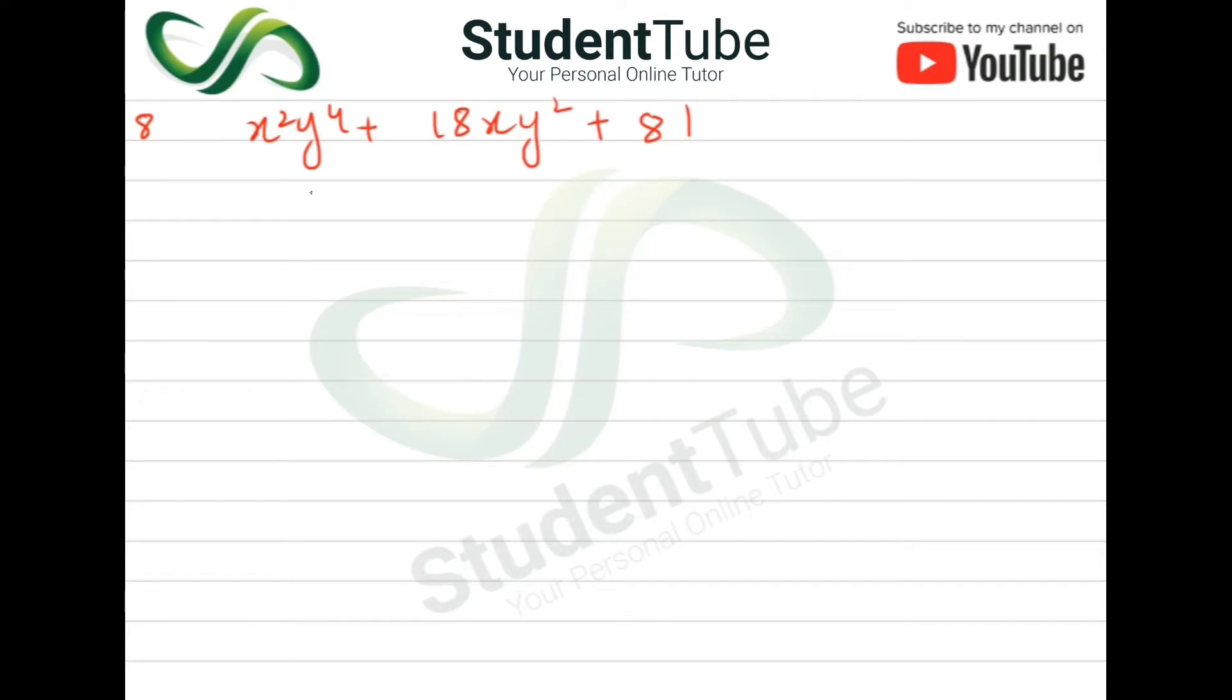Question number 8: we have x²y⁴ + 18xy² + 81. Now we have to solve it here.